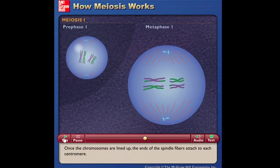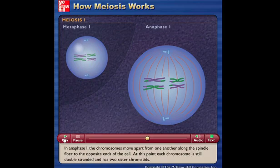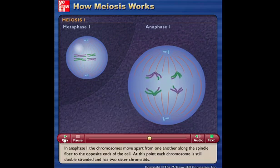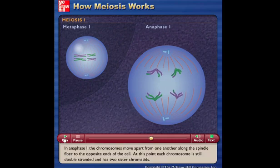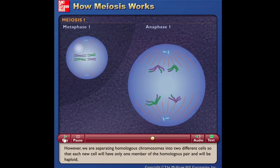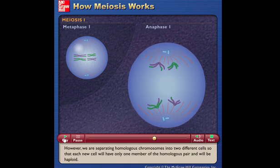Once the chromosomes are lined up, the ends of the spindle fibers attach to each centromere. In anaphase I, the chromosomes move apart from one another along the spindle fiber to the opposite ends of the cell. At this point, each chromosome is still double-stranded and has two sister chromatids. However, we are separating homologous chromosomes into two different cells, so that each new cell will have only one member of the homologous pair and will be haploid.